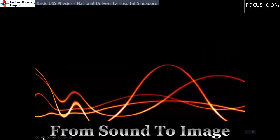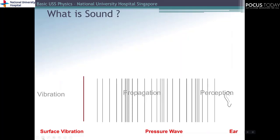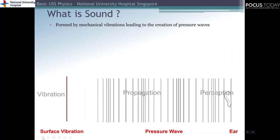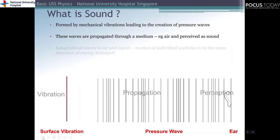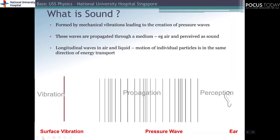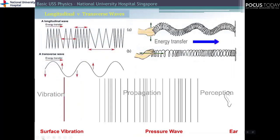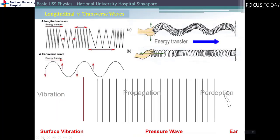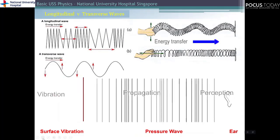Let's now go through the properties of sound waves and how we generate images from ultrasound. Sound is produced by mechanical vibration leading to formation of a wave of vibrating particles. The particles in the medium through which the sound propagates undergo areas of rarefaction and compression. The waves produced are longitudinal in nature when passing through air or liquid, and transverse in nature when passing through solids. The vibration of particles in the medium leads to propagation of the wave, which is perceived as sound when it reaches the listener.